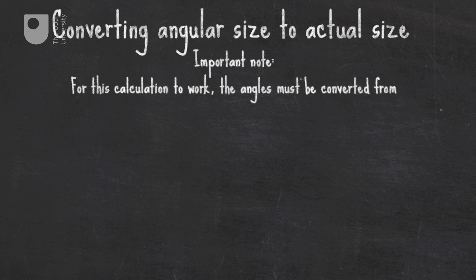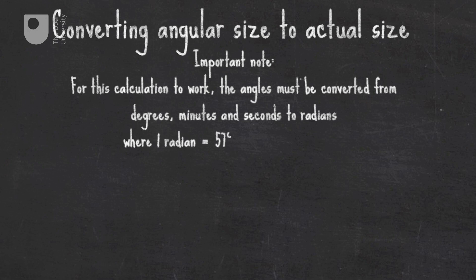the angle must be converted from degrees, minutes and seconds to radians, where 1 radian equals 57 degrees.